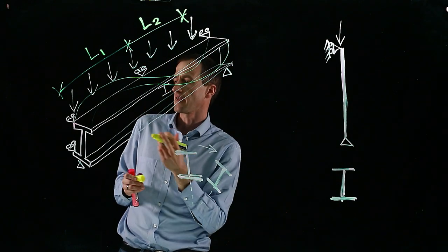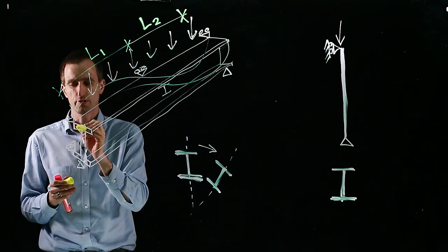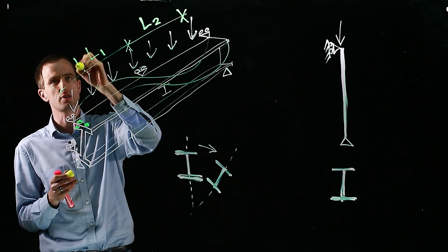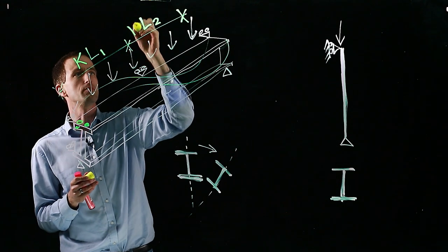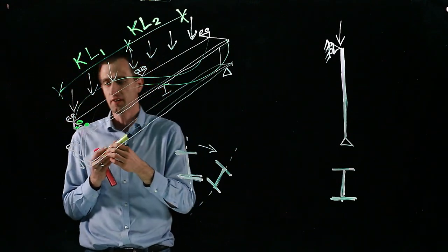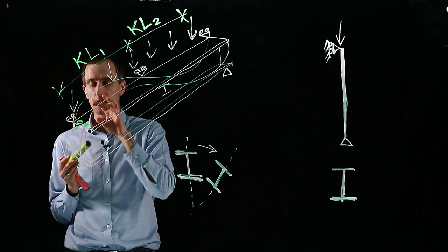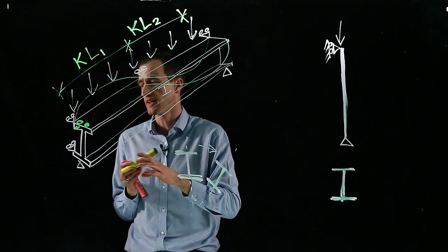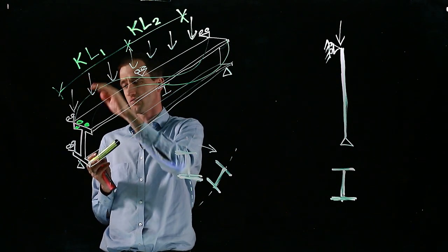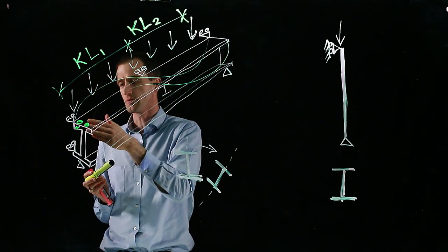This effective length is influenced by the boundary condition. So what is fixed to it here? And does this prevent rotation at this position? So we can potentially modify it by an effective length factor K. But at fire condition behavior, connection behavior is very complex in fire. So in general, probably safer keeping this at one, so a simply supported condition where it's free to rotate, unless you do have good information.